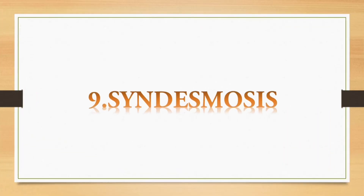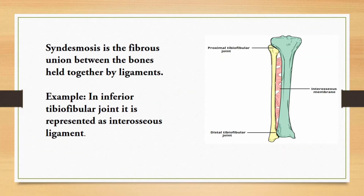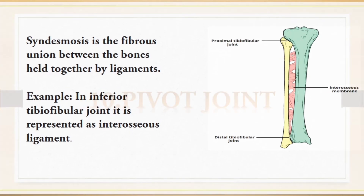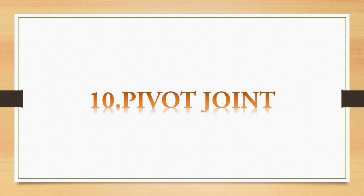Ninth question: syndesmosis. Syndesmosis is a fibrous union between the bones held together by ligaments. Example: in the inferior tibio-fibular joint, it is represented as the interosseous ligament. Here in this diagram, you can clearly see the interosseous membrane between the tibia and fibula.